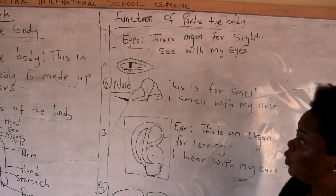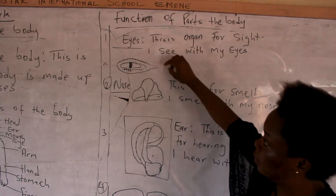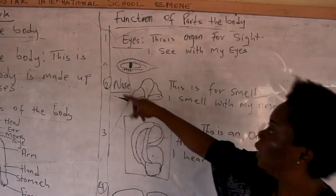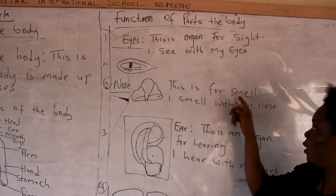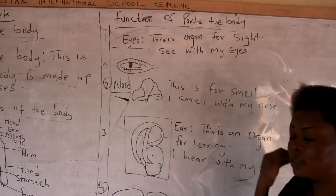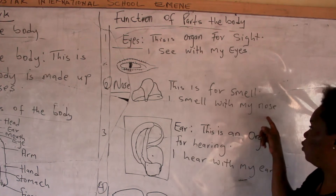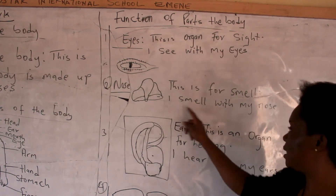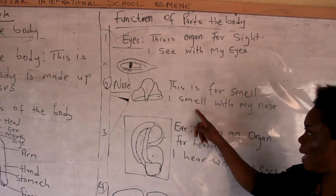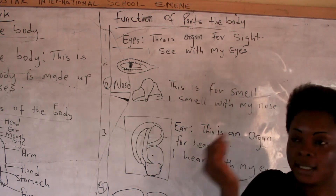You can see the diagram — this is how to draw an eye. Now let's go to number two. Number two is nose. This is for smell — it is the organ for smell. We use our nose to do what? Smell. Children, repeat after me: I smell with my nose. We use our nose to smell.